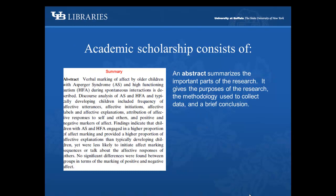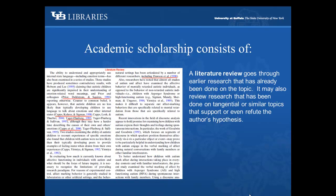An abstract summarizes the important parts of the research. It gives the purposes of the research, the methodology used to collect data, and a brief conclusion. A literature review goes through earlier research that has already been done on the topic. It may also review research done on tangential or similar topics that support or even refute the author's hypothesis.